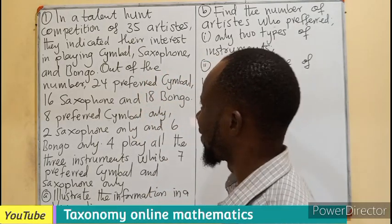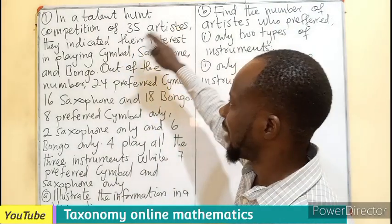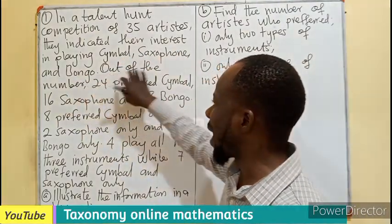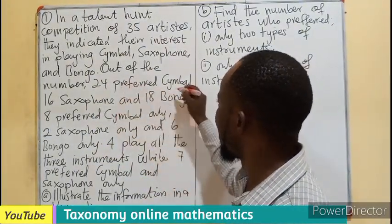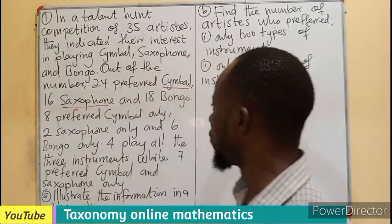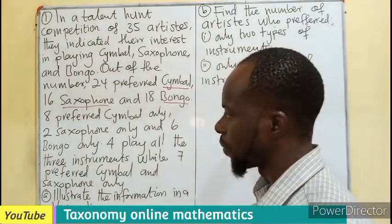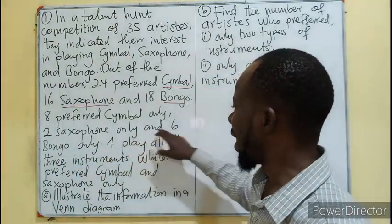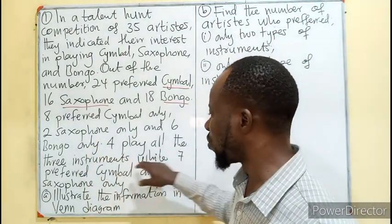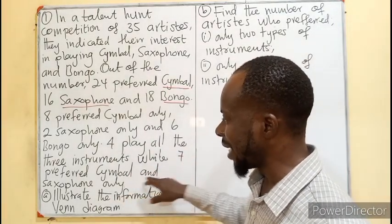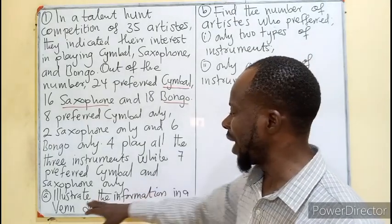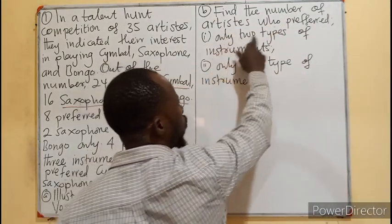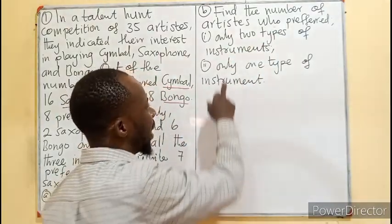In a talent hunt competition of 35 artists, they indicated their interest in playing the cymbal, the saxophone, and the bongo. Out of this number, 24 preferred cymbal, 16 preferred saxophone, and 18 preferred bongo. Eight preferred cymbal only, two saxophone only, and six bongo only. Four played all three instruments, while seven preferred cymbal and saxophone only. The first task is to illustrate the information on a Venn diagram.